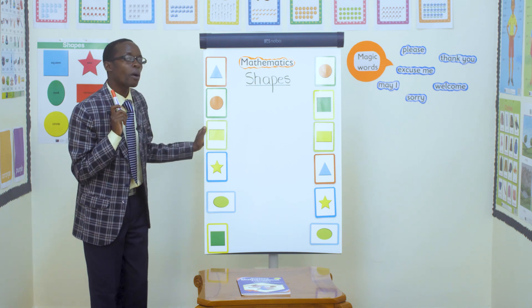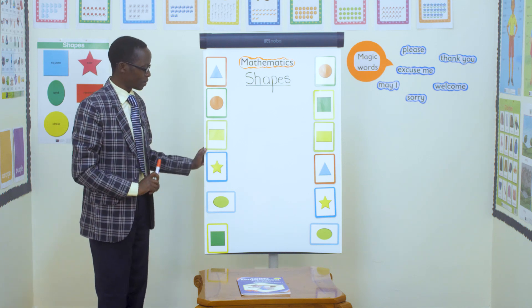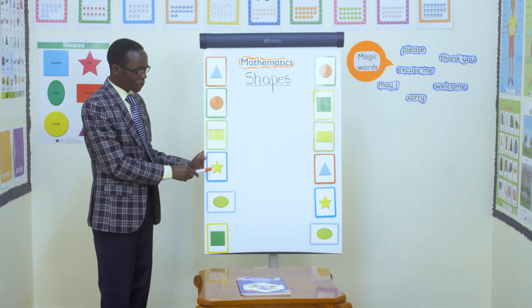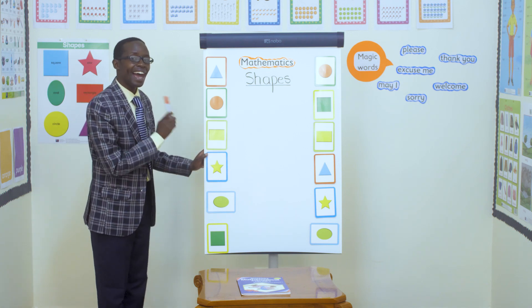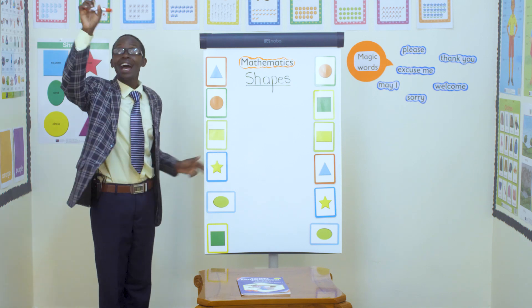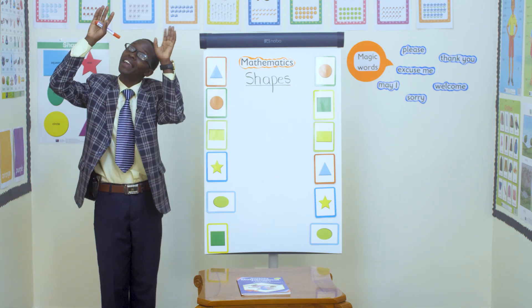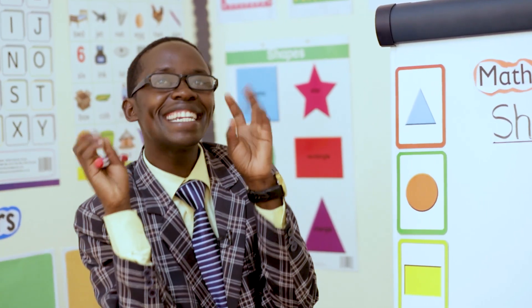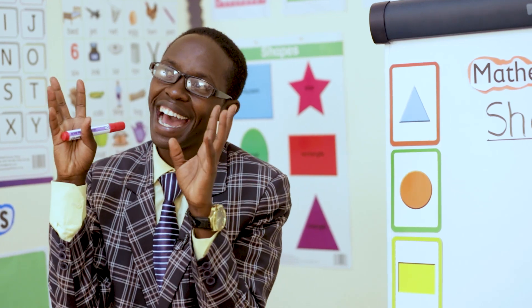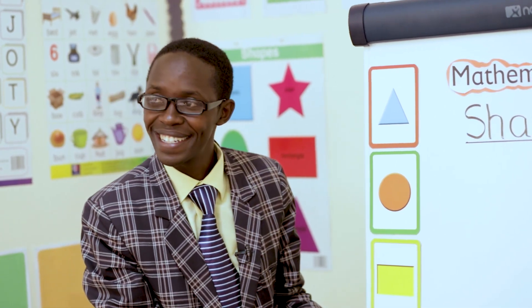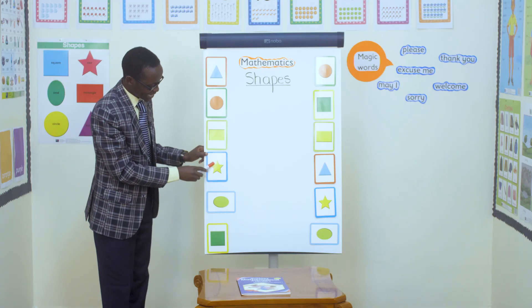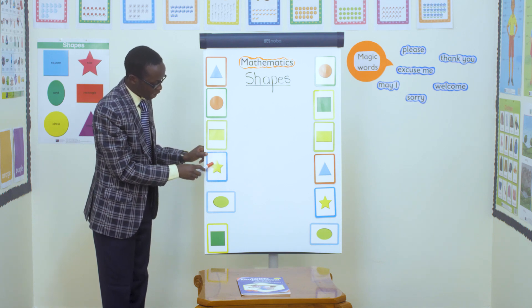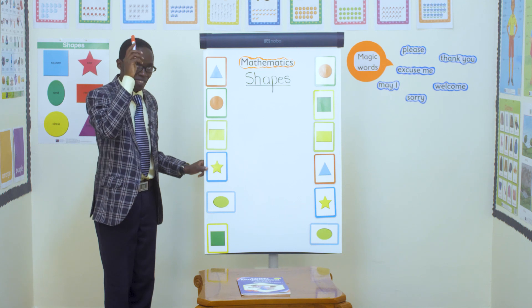Everybody say rectangle. Wonderful. Let's go to the other one. Can you see? Which one is this? Star. It looks like a star — like stars that we see there in heaven. Twinkle, twinkle, little star. Wonderful star. It looks like it has many sides because it looks like those stars in the sky.